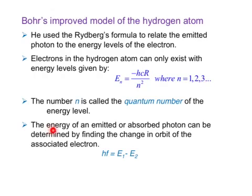The energy of an emitted or absorbed photon can be determined by finding a change in orbit of the associated electron. So the energy here of the photon is equal to the difference between two energy levels.